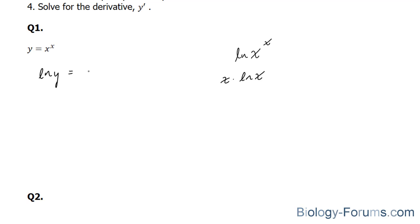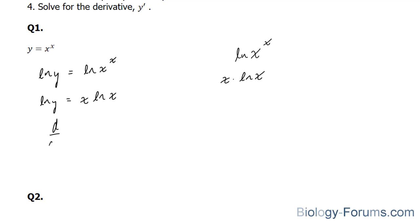ln of y is equal to ln of x to the power of x. So in the next step, I'll leave the left side the way it is, and this x will come to the bottom where it is now a product. The next thing I'll do is implicitly differentiate both sides. On the left side, we'll have d/dx of ln y, and on the right side, d/dx of x times ln x.